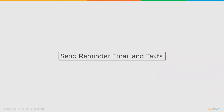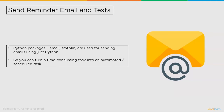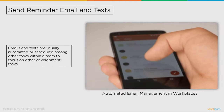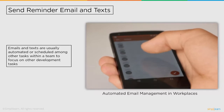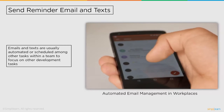Followed by data mining, we have send reminder emails and text messages. Python is often used in workplaces to automate and schedule the sending or receiving of emails and text messages. Python packages like email and smtplib are used for sending emails using just Python. You can turn a time-consuming task into an automated or scheduled task. Emails and texts are usually automated or scheduled among other tasks within a team to focus on other development tasks. This increases productivity and encourages better time management in a team.